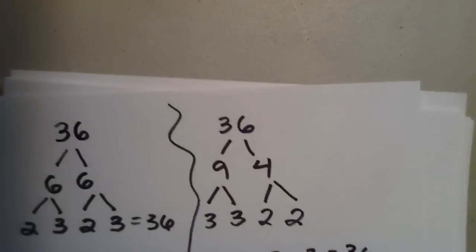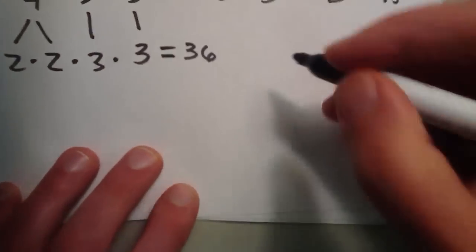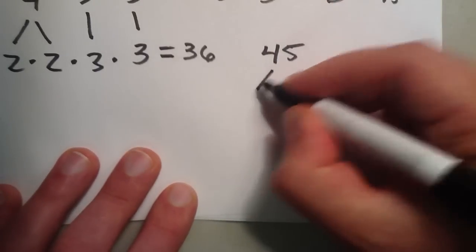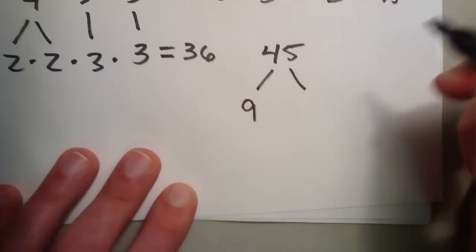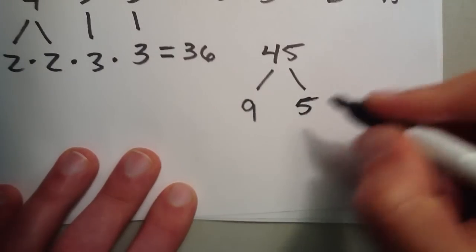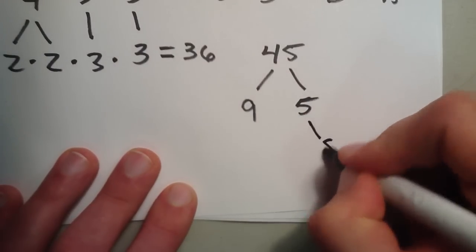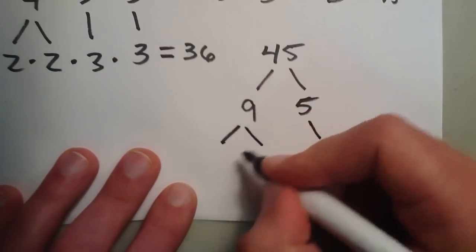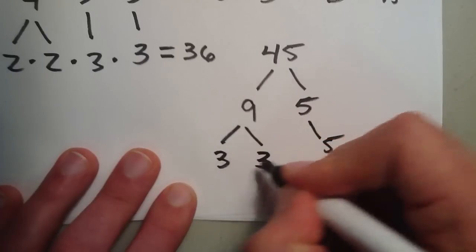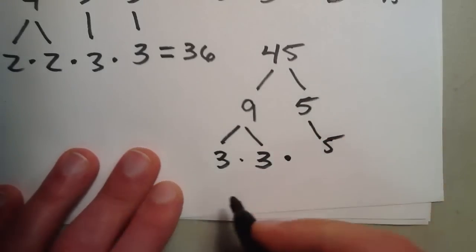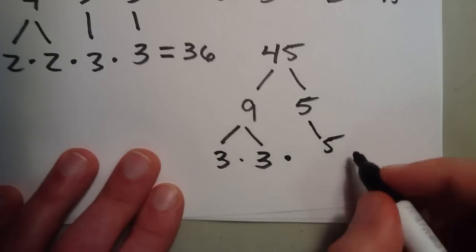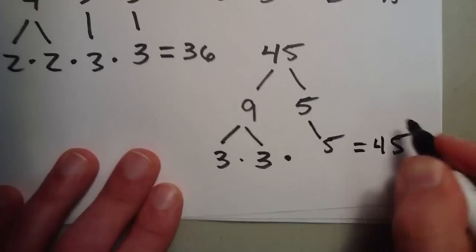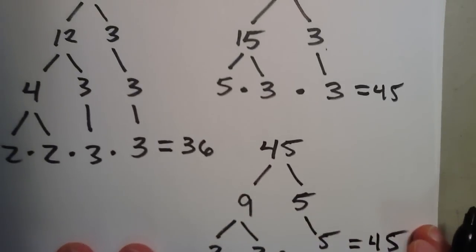Let's try 45 a different way. 45 can be broken down into 9 times 5. 5 is prime, we carry it down. 9 can be broken down into 3 times 3, so 3 times 3 times 5 equals 45. Same as we got from above.